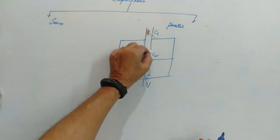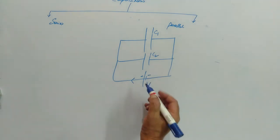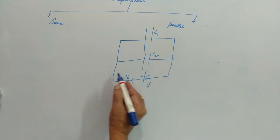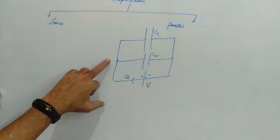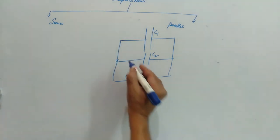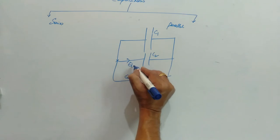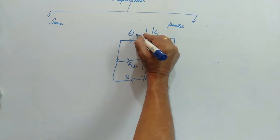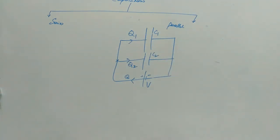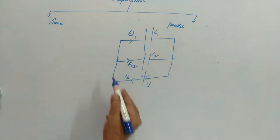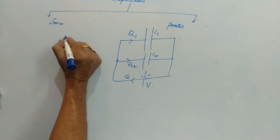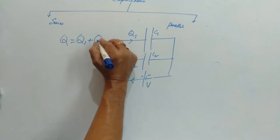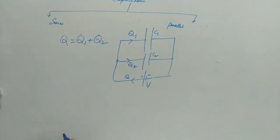Let us derive the effective capacitance for parallel connection. A charge Q is drawn from the cell. At the nodal point there are two paths, so some charge Q1 will flow through capacitor C1 and some charge Q2 will flow through capacitor C2. By conservation of charge, Q = Q1 + Q2.